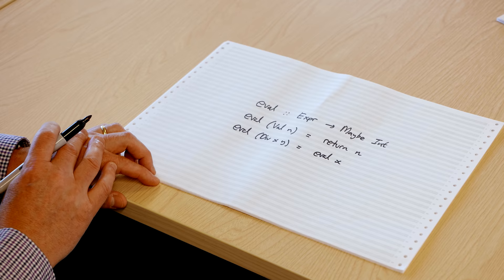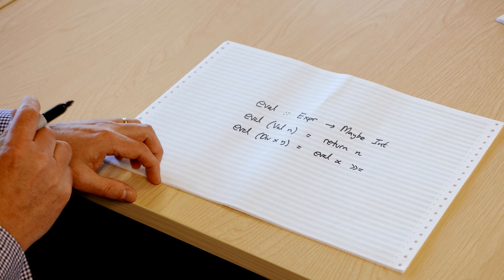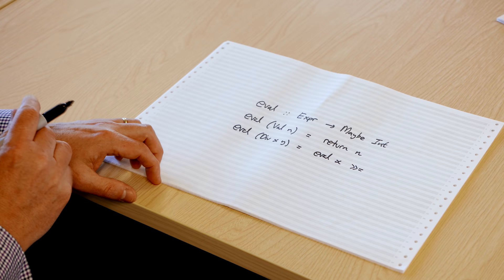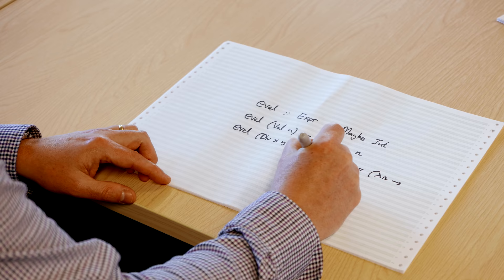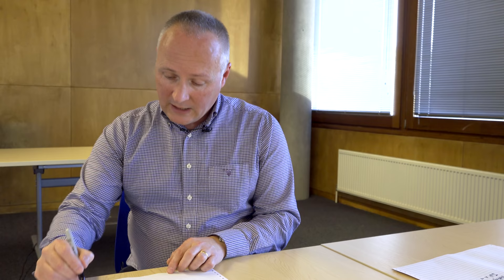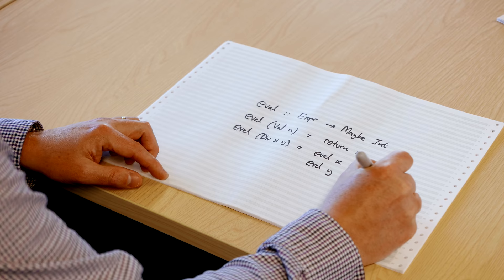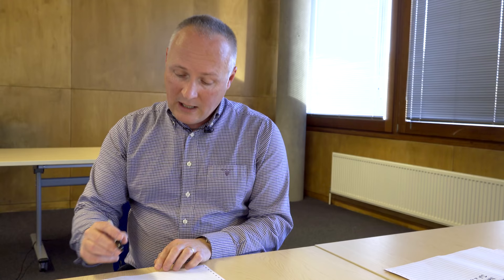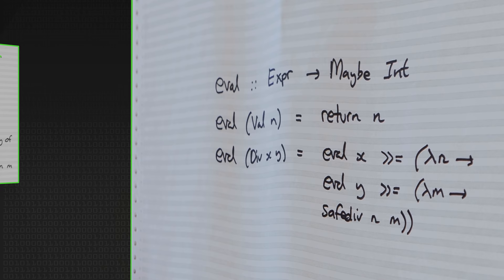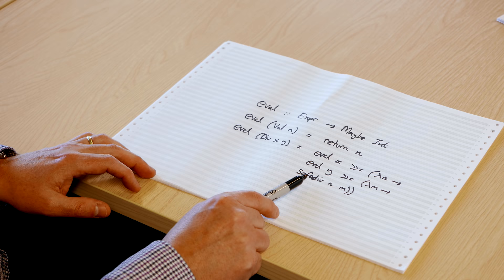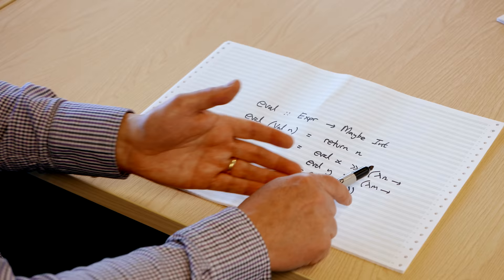In the division case, we evaluate x, and if that's successful — using our sequencing operator — we feed the result n into a function. That function then evaluates y, and if that's successful, we feed result m into another function using the lambda notation. If both succeed, we call safediv with n and m. This program is equivalent to the one with all the nested case analyses, but all of that has been abstracted away into return and the sequencing operator. It's a nicer program, though I'm still not entirely happy — there's still the lambda notation and the sequencing symbol.